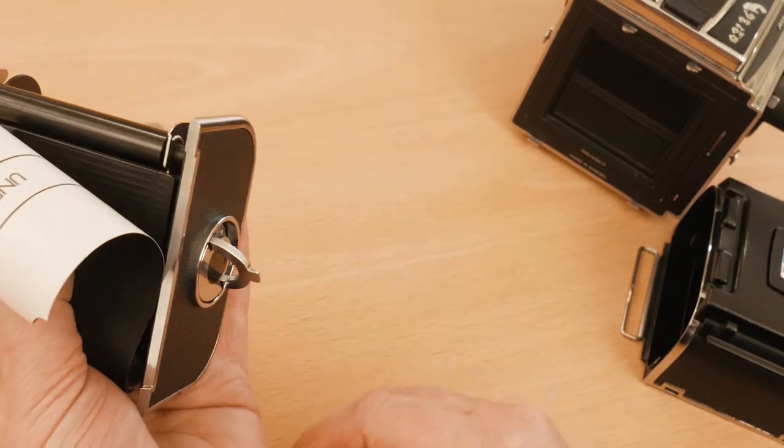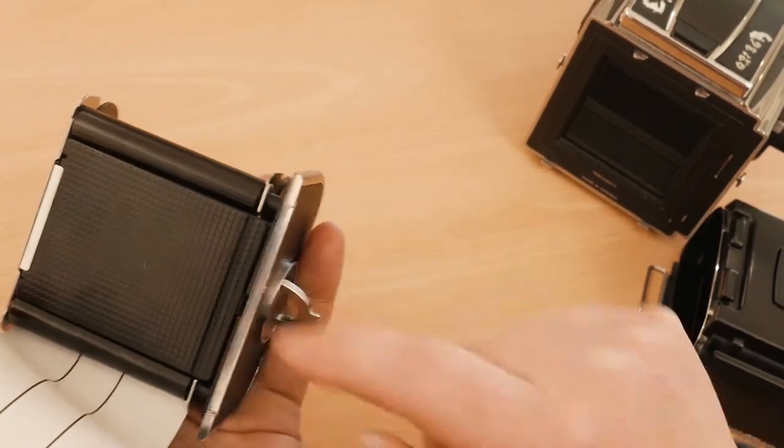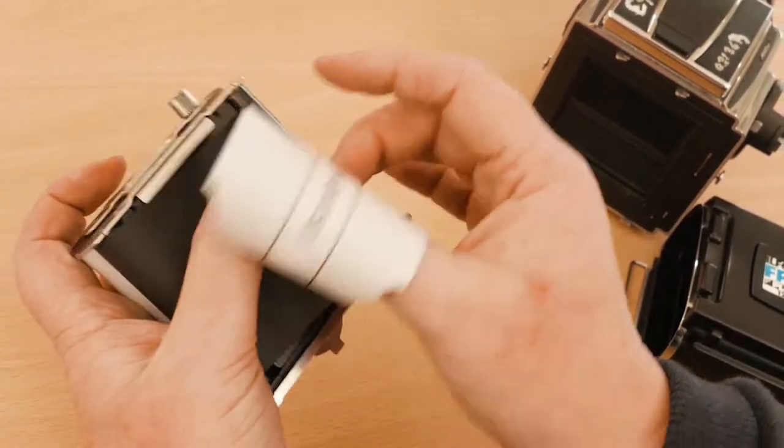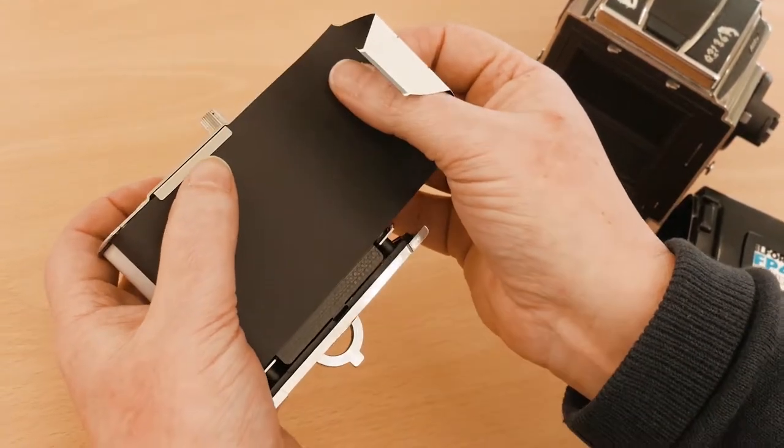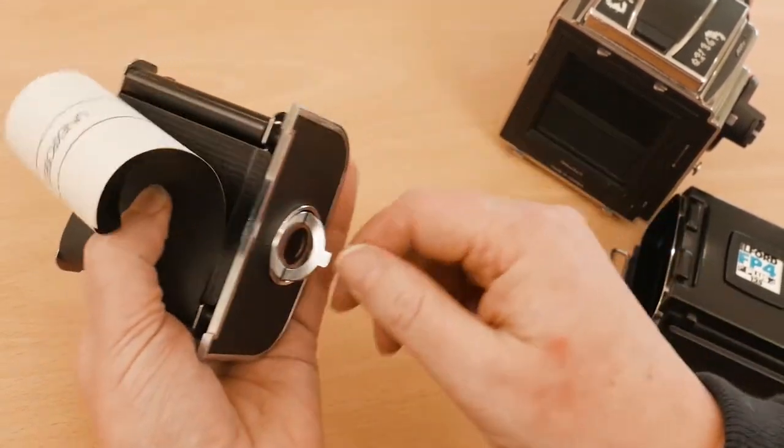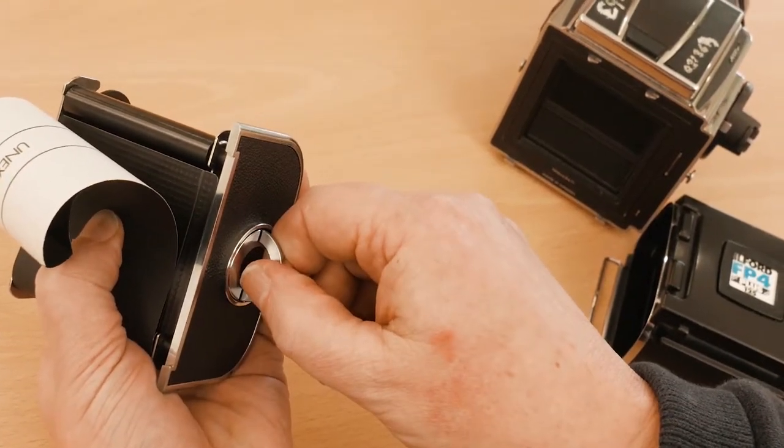The way to do that is to release this pressure plate and I'm going to turn that. That releases the pressure plate. I can then put the paper up underneath that silver strip like so and then I'm going to reapply the pressure plate.